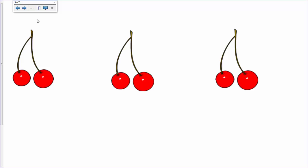We can make six another way. We can have three groups. Here, we have three groups of cherries with two in each group.